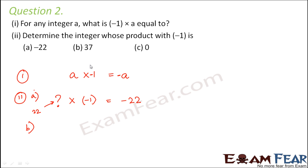Similarly, in order to get the product as 37, the integer should be -37. In order to get the product as 0, the integer should be 0 because 0 × (-1) is equal to 0.